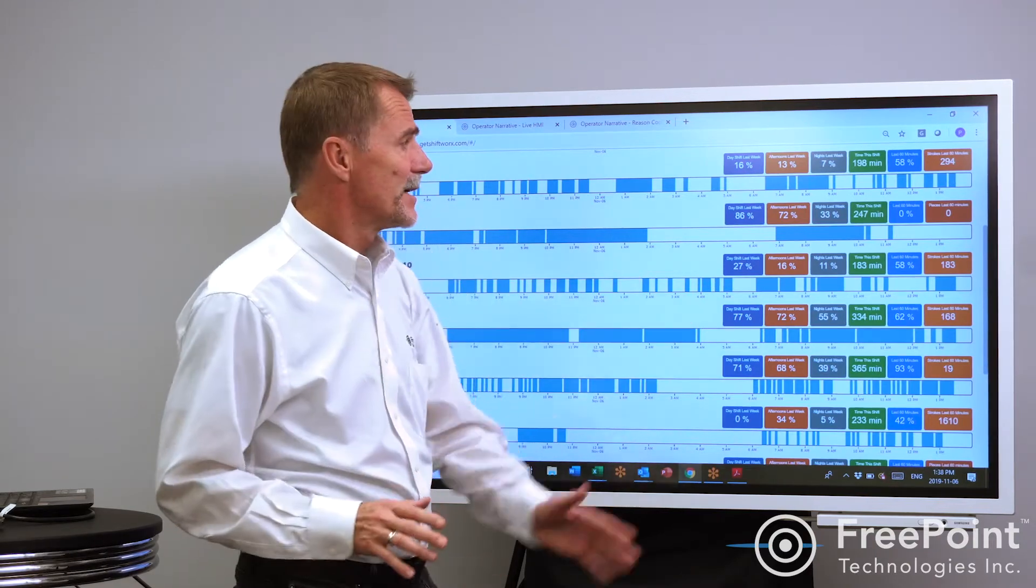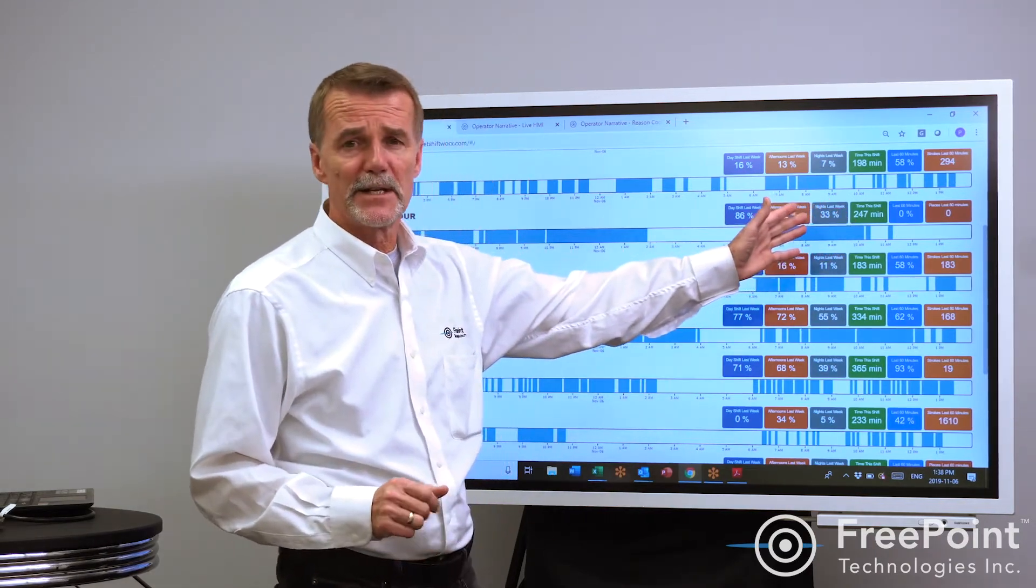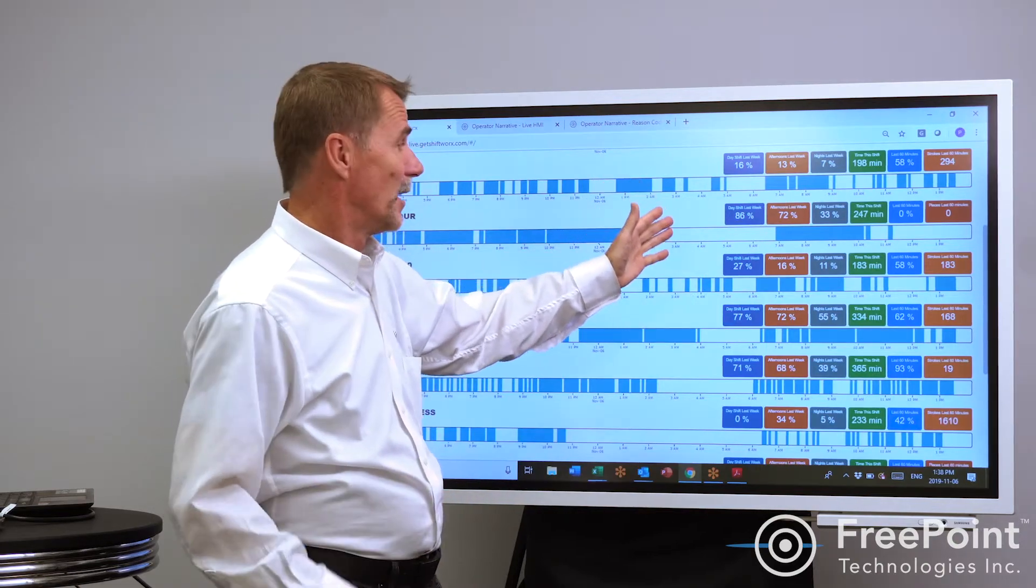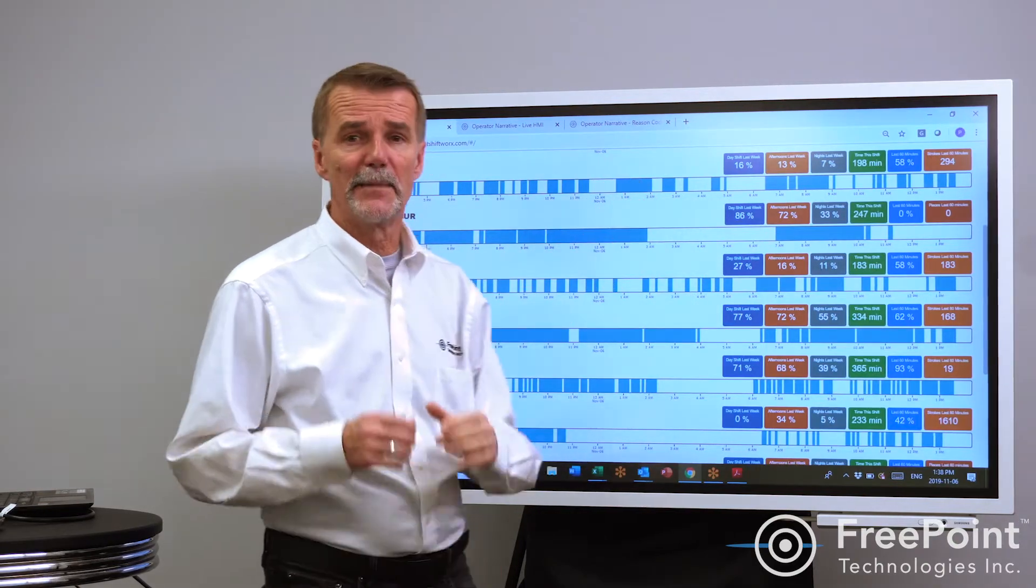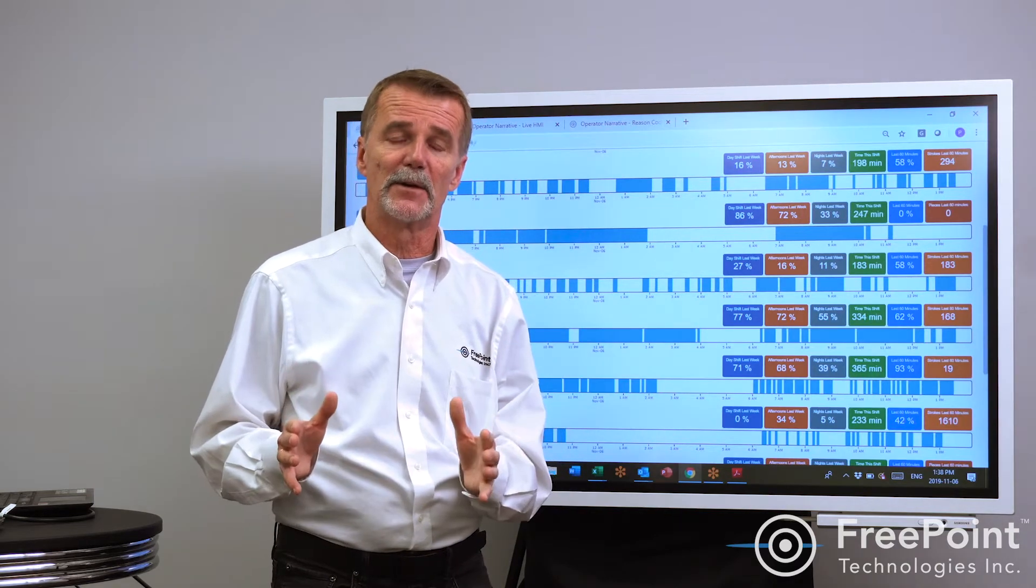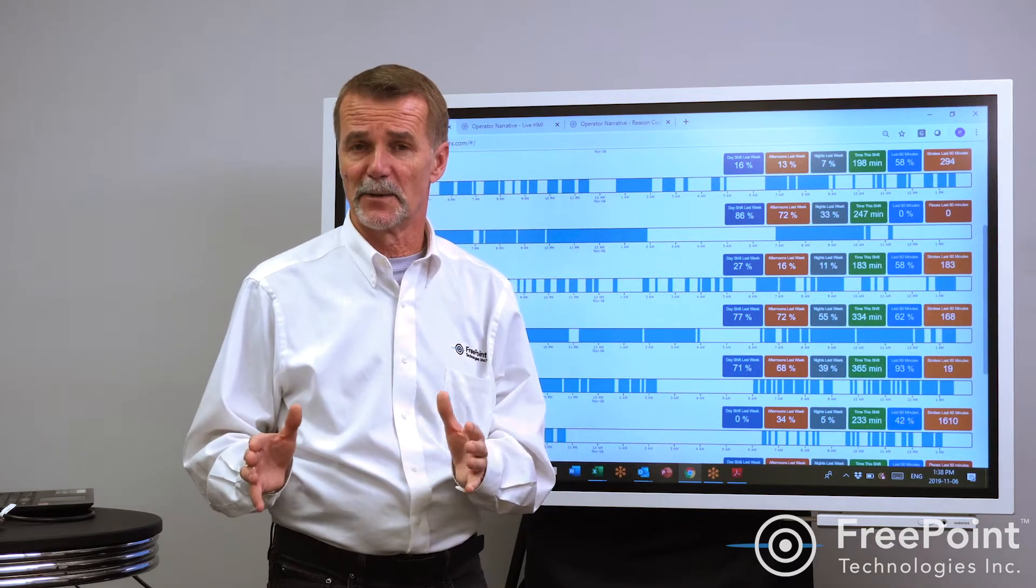The way we measure machines is we paint the bar blue whenever the machine is in a value-adding condition and it's not whenever it's not in a value-adding condition. We make it visible for everybody so everybody's on the same page. Everybody knows when the machine is adding value and when it's not.